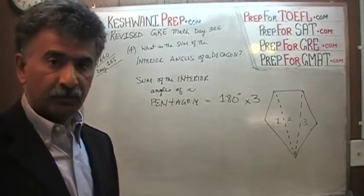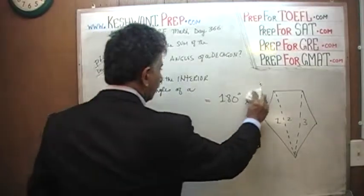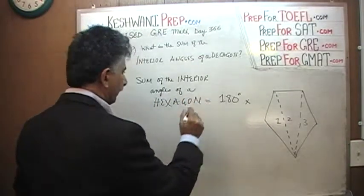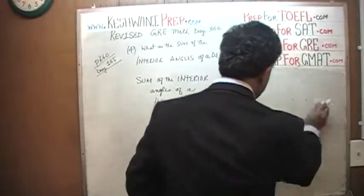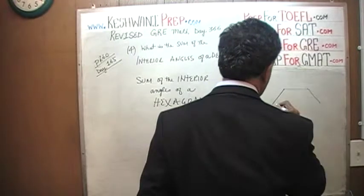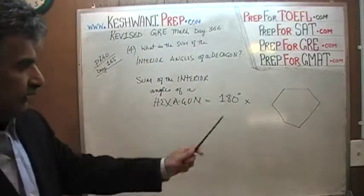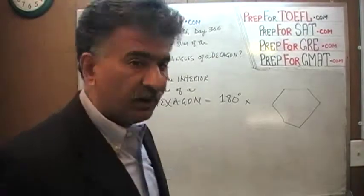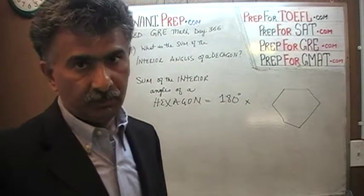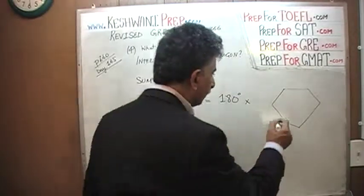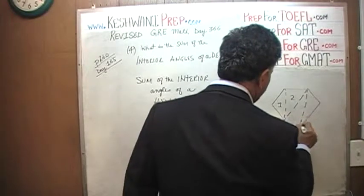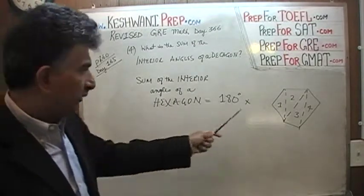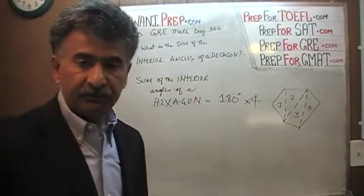A six-sided figure is called a hexagon. A hexagon is a six-sided figure. Again, it does not need to be symmetrical. A hexagon is simply a union of four triangles — it is made up of nothing but four triangles. And since the sum of the interior angles of a triangle is 180, and a hexagon is made up of four triangles, the sum of the interior angles of the hexagon is simply 180 times 4.